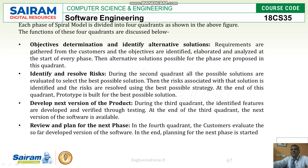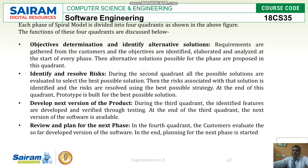The first stage is objective determination and identifying alternative solutions. The objectives are nothing but the requirements, so those have to be identified, and any other solutions should be checked. After identifying the solutions, you can resolve the particular risk — any risks present need to be calculated and resolved by applying the best possible strategy.